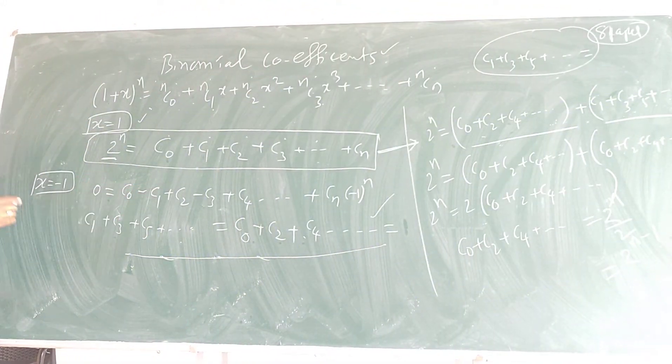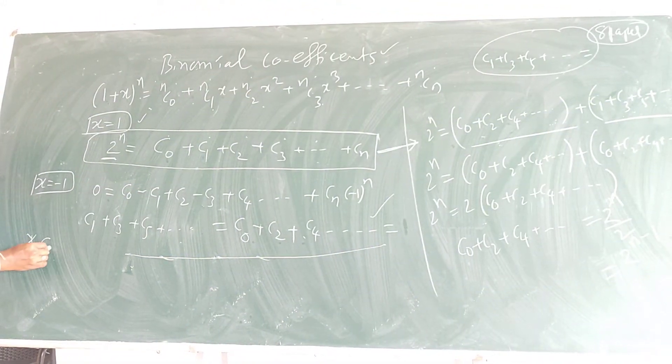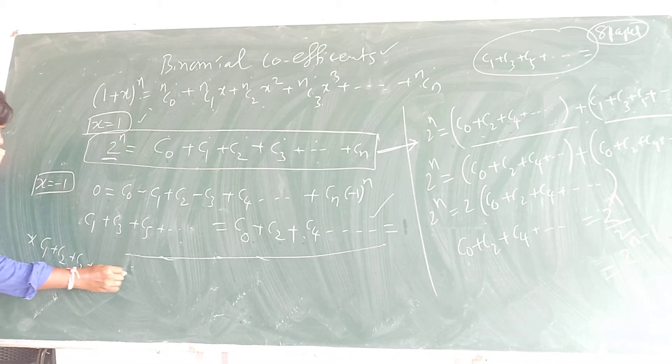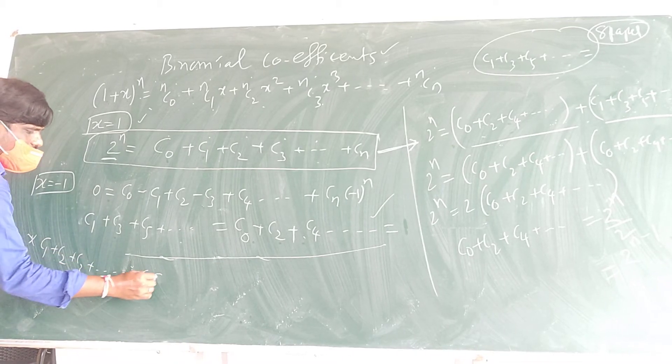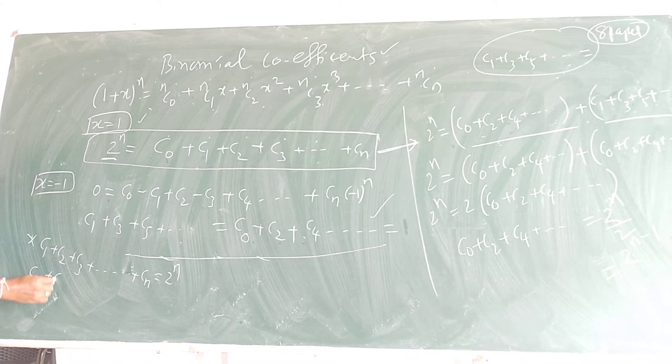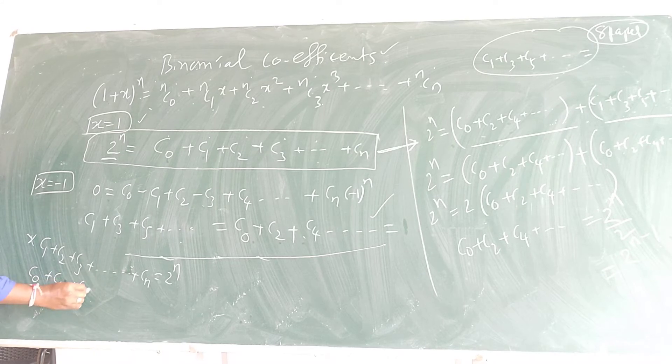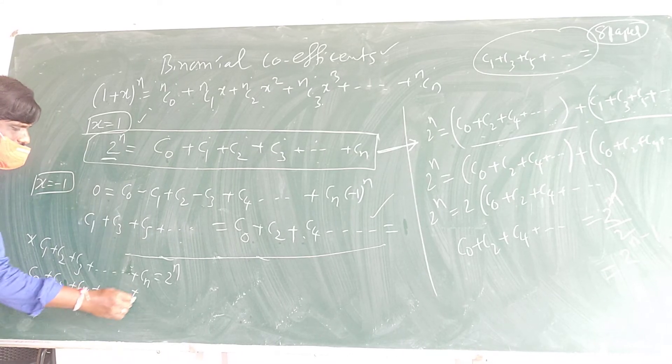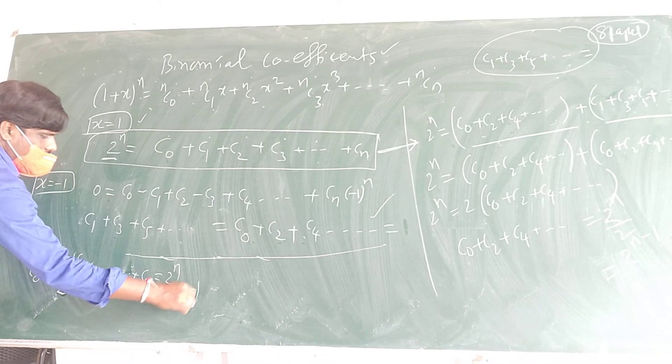That is: C0 + C1 + C2 + C3 + ... + Cn, the answer is 2^n. When you have C0 + C2 + C4 + ... and so on, that time the answer is 2^(n-1).